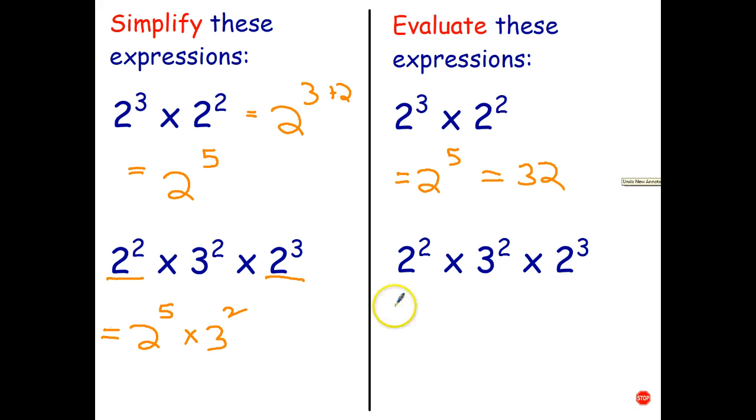Now, if we're asked to evaluate that, we can simplify it first as we did before. And then we have to work out what is 2 to the power of 5, which is 32. We did that up there. And 3 to the power of 2 is 9.